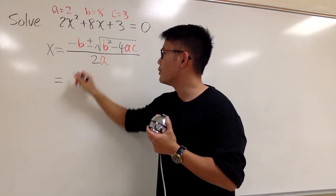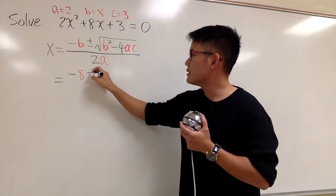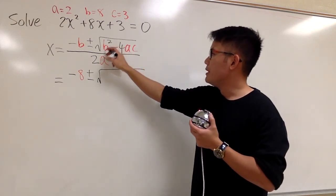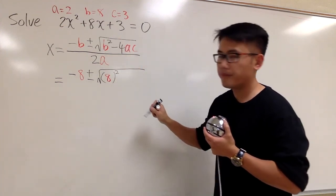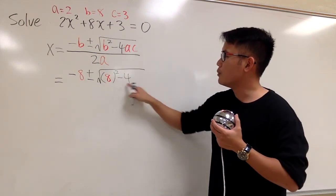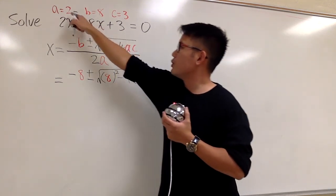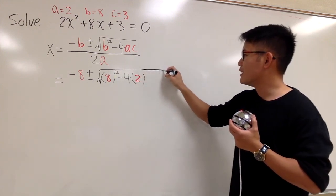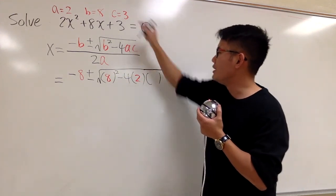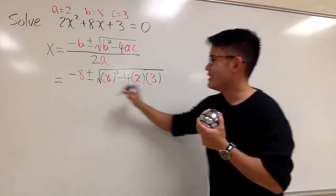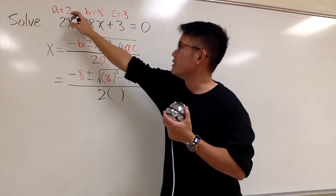So we will have negative b — we know b is 8 — so we put down negative 8, and then we have the plus or minus, and then we open the square root. We have b squared, b is 8, so let's put 8 in parentheses raised to the second power, then we have minus 4. For a we multiply, putting 2, and for c we put 3. All this is over 2 times a, so we write 2 times 2.